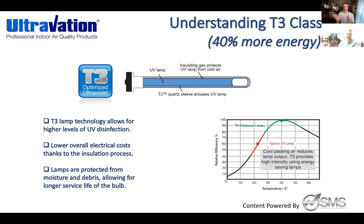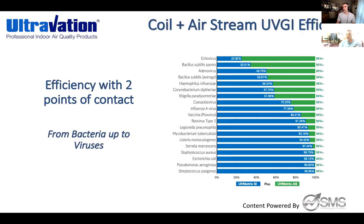A lot of contractors have figured out that from a cost-effectiveness standpoint, they'd rather offer the T3 product, put the person on a two-year bulb change, and get better performance. That technology is available residentially and commercially — T3 is pretty much standard on our commercial products. This graph helps people understand that not all bulbs are the same; it came directly out of our commercial literature.